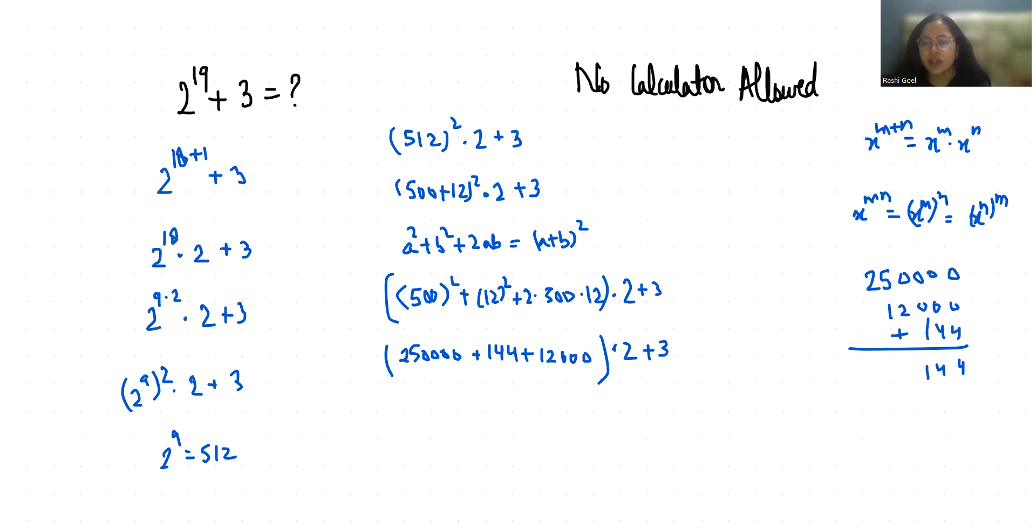Now after that we have to multiply this by 2. 2 times 6 is 12, carry 1. 2 times 2 is 4, plus 1 is 5. So 524,288.